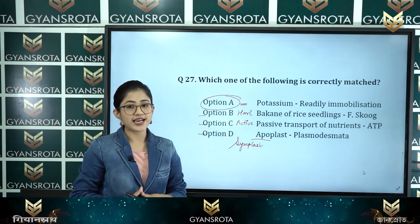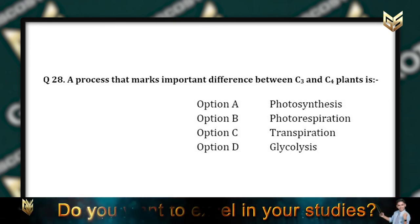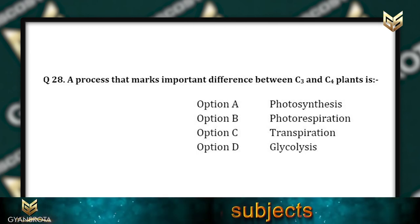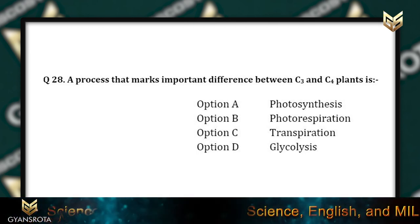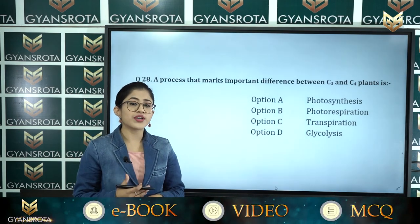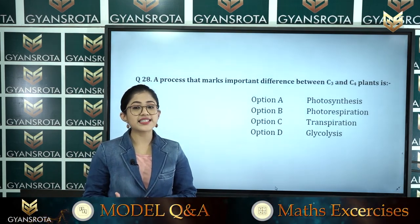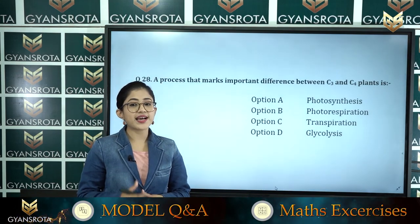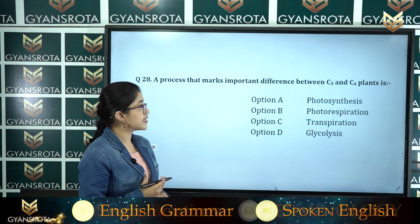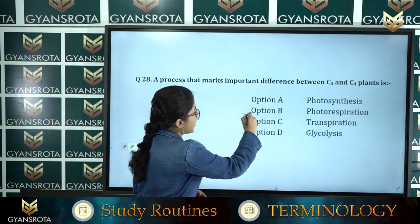Question number 28: A process that marks an important difference between C3 and C4 plants is — option A photosynthesis, option B photorespiration, option C transpiration, option D glycolysis. C3 plants lack photorespiration whereas C4 plants undergo photorespiration — this is the major difference between them. Option B, photorespiration, is the correct answer.